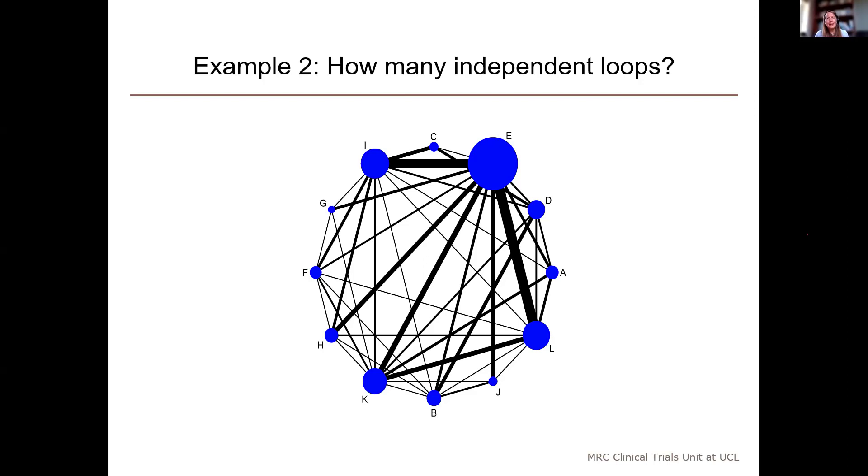If you were to try and work out which independent loops there were by hand in this network, it would be very laborious. You would have to go through breaking one loop at a time and writing down which loop you've just broken. I think it would be very easy to make mistakes. This is why we needed to have an algorithm which helped us to identify the independent loops in the network.